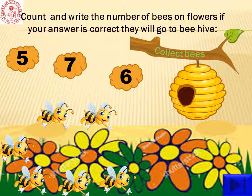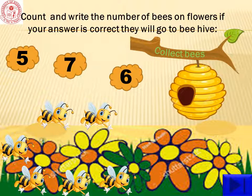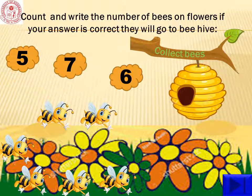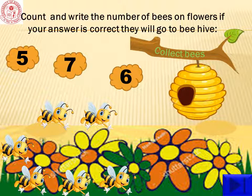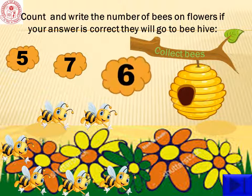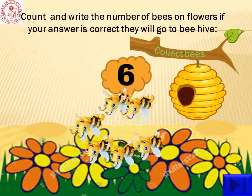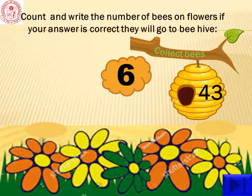Now, let us find the bees on the flowers. One, two, three, four, five, six. Yes, there are six bees. Click on number six. They are flying into the beehive.